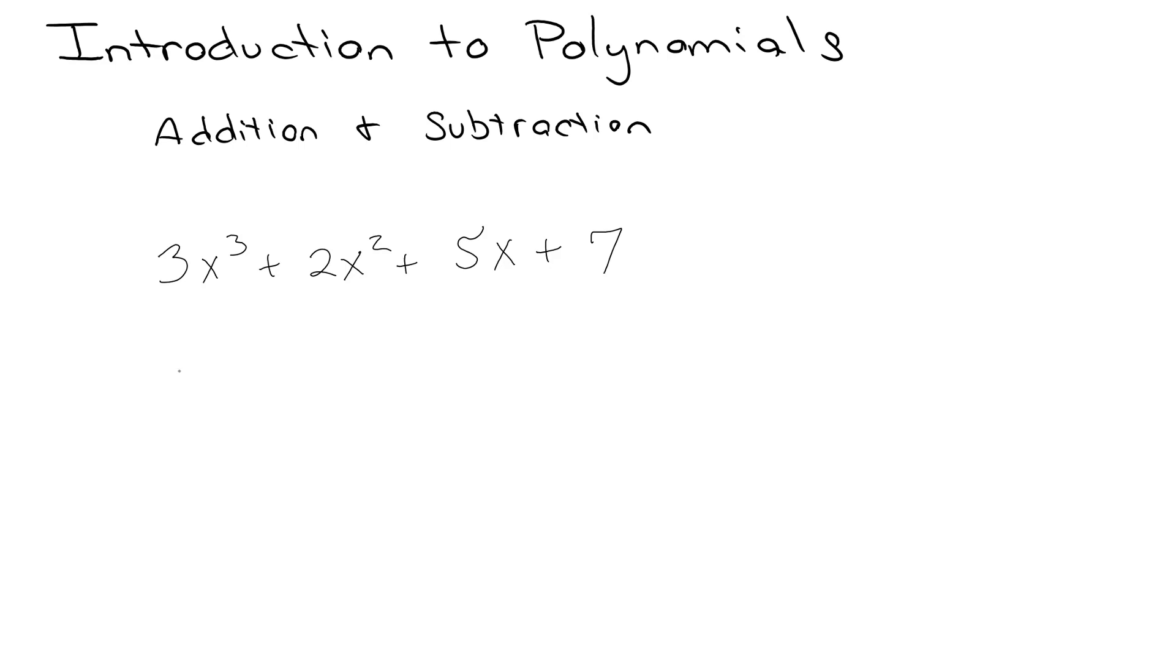Another polynomial could look like negative 8x to the fifth minus 3x plus 9, or it could be 22 over 7x to the 42 minus 3x to the fifth. Polynomials are amazing.